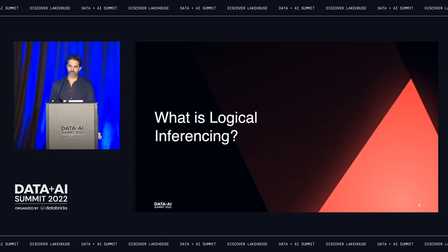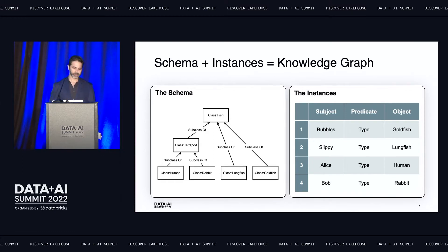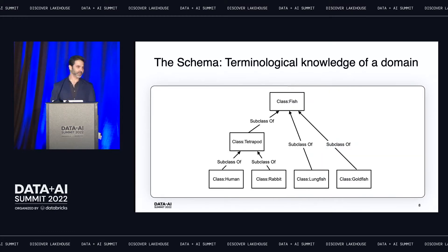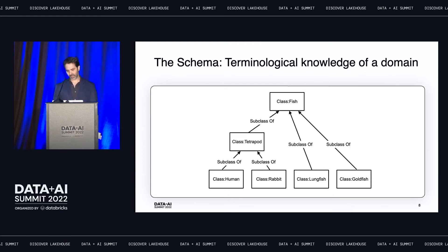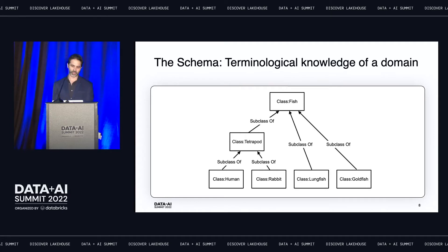So what is logical inferencing? A knowledge graph has two parts: the schema and the instances, or the data. The schema contains your entities and connections in your domain model. In this simple domain model, we've got class of fish, class of tetrapod, human, rabbit, lungfish, and goldfish, all connected with subclass of connections. This is our domain model.